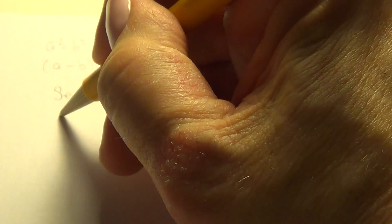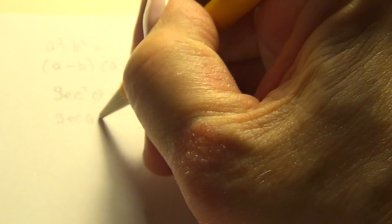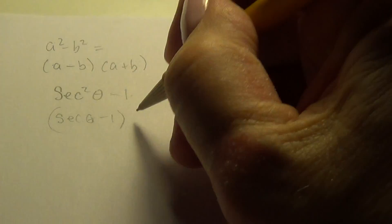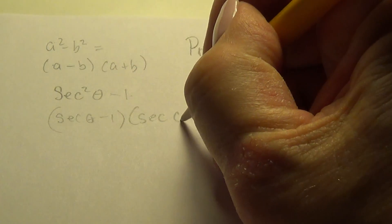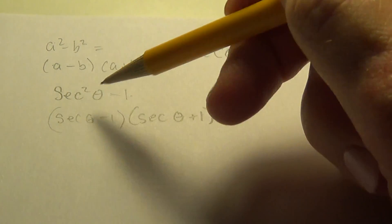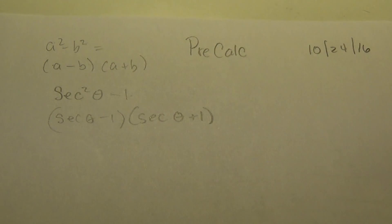The first minus the second times the first plus the second. So in this case, it's secant theta minus one times secant theta plus one. Do you see how this pattern has been followed in this line here? All right.